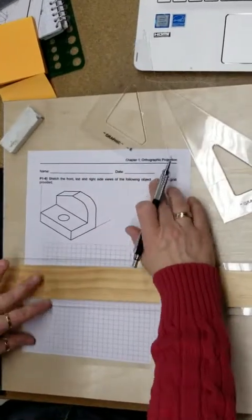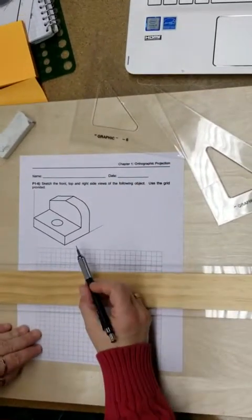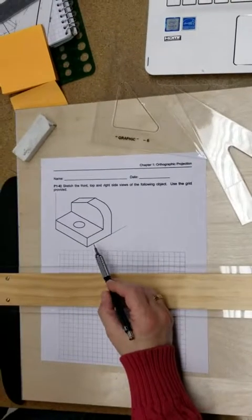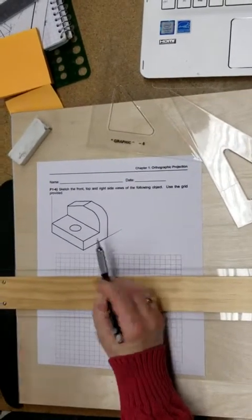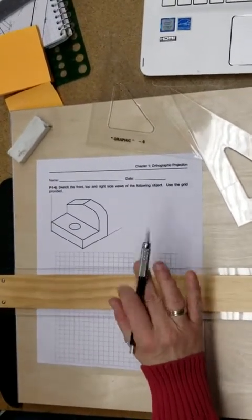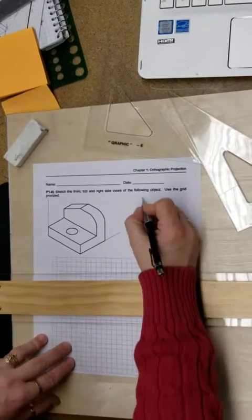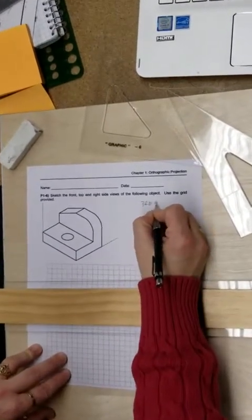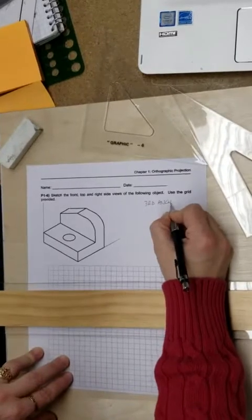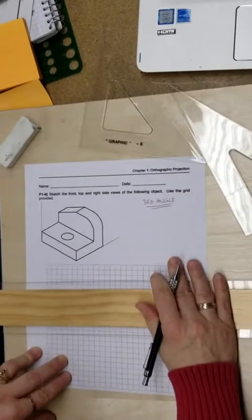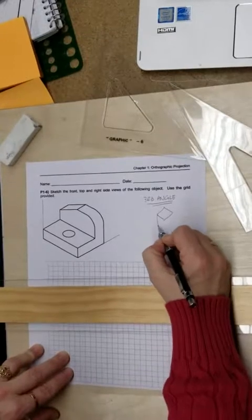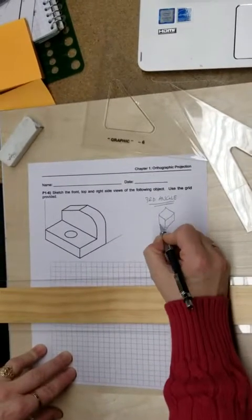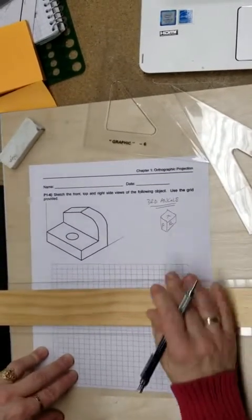What we're going to talk about today is how to develop views off of an object. This object, for example, has no dimensions on it at all. We're going to do it in third angle projection, which is the U.S. projection standard. We're going to respect the cube, the cube being the usual front view, right view, top view.